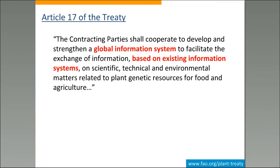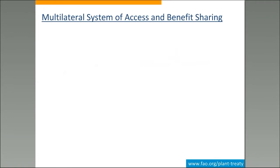Article 17 of the treaty calls for this global information system as a way to facilitate access to scientific, technical, and environmental data relating to the plant genetic resources conservation and use. The important thing is that the global information system should be based on existing systems. We don't want to replicate and reinvent the wheel. We want to facilitate access and integration of existing systems so that they cooperate in a more effective way.